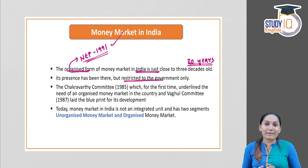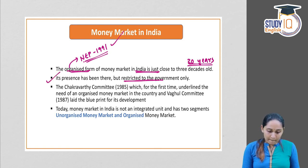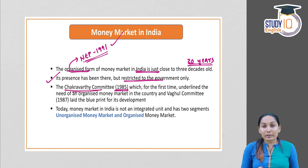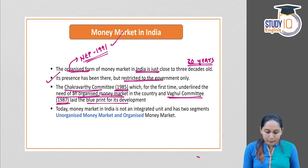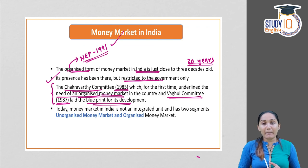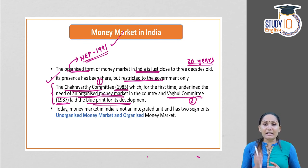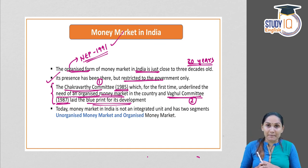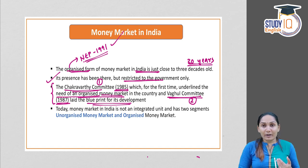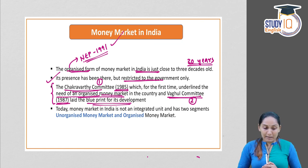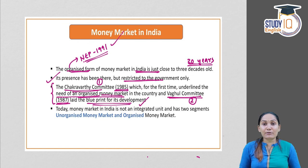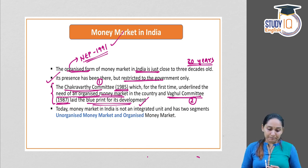The organized form of money market in India is just close to three decades old — about 30 years. The money market became popular and part of the formal sector only about 30 years ago. The 1991 LPG reforms — the New Economic Policy (NEP) of 1991 — had a very significant role, as the money market became more popular and more formal after these reforms.